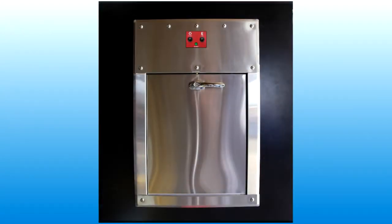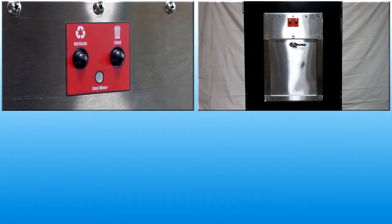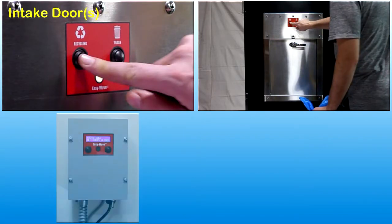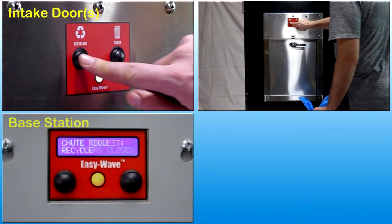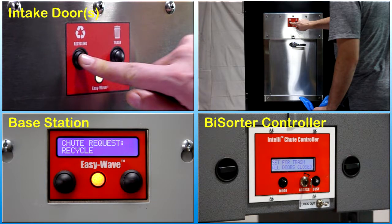Users press and release the recycle button on the intake door user interface to open a door on a BiSorter chute system for recycled materials. The base station controller operates in response to the input switch signals by using the communication connection with the sorter control system to set up the sorter equipment to receive the recycling materials.